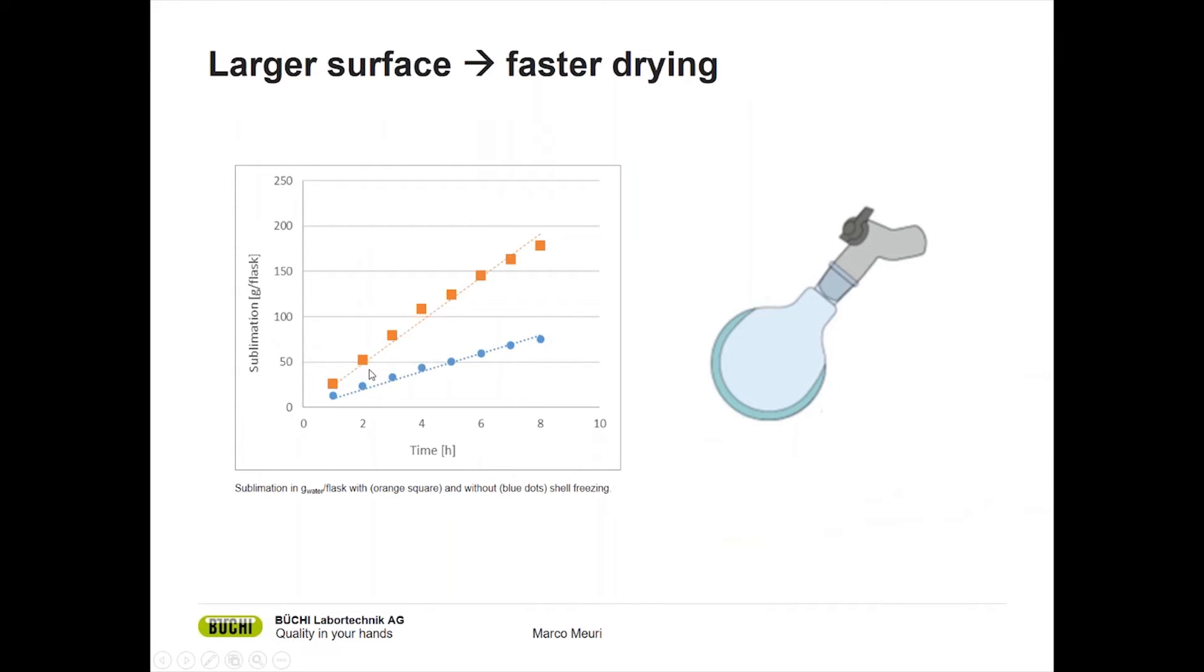What is the benefit if you freeze your sample in this way? If you look at the picture on the right hand side, this is a flask that has been frozen by shell freezing. What you can see is that the inner wall of the flask is covered with ice. Due to that, the surface of the ice is as big as possible. For freeze drying, or for the speed of freeze drying, it is very important that the sample has a big surface, because the bigger the surface, the bigger the area where the sample can actually sublimate. This will have a huge impact on the freeze drying of your sample.